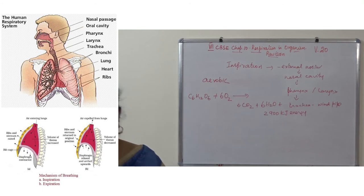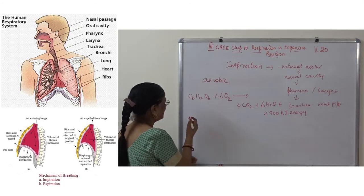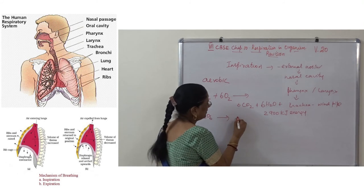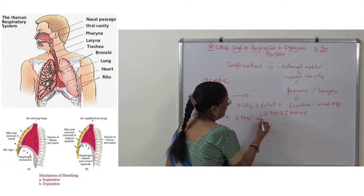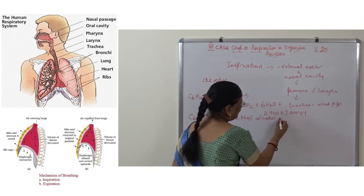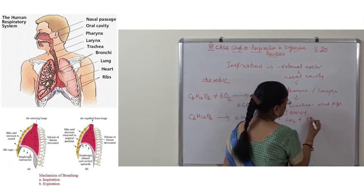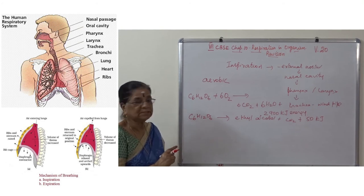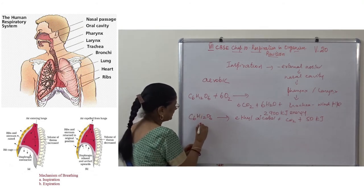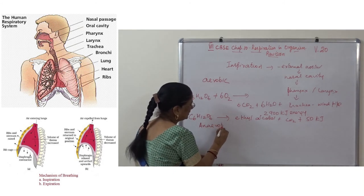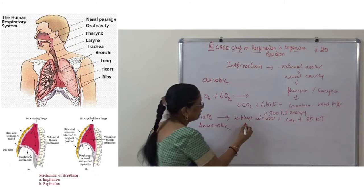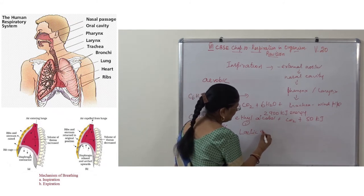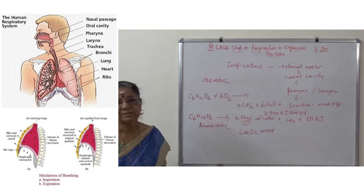When respiration takes place in the absence of oxygen, C₆H₁₂O₆ gives ethyl alcohol plus carbon dioxide plus 50 kJ of energy. This is anaerobic respiration. The byproduct is ethyl alcohol in one method, and lactic acid in another method.